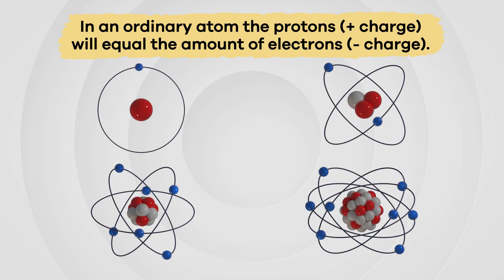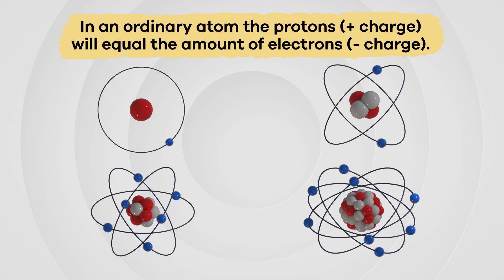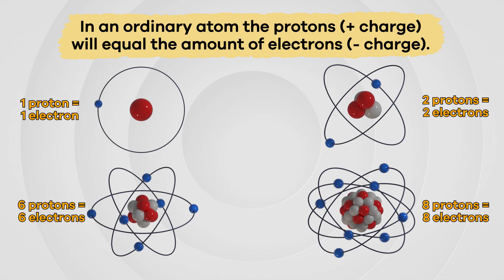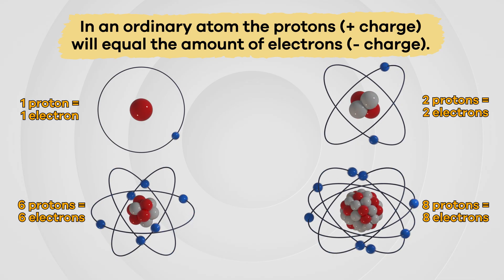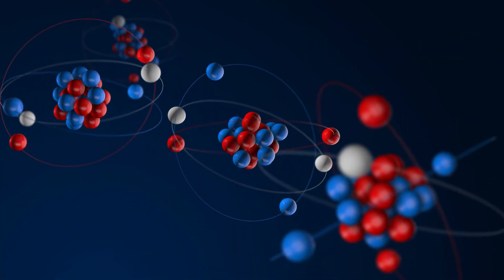In an ordinary atom, the protons' positive charge will equal the amount of electrons' negative charge, keeping the atom in balance.